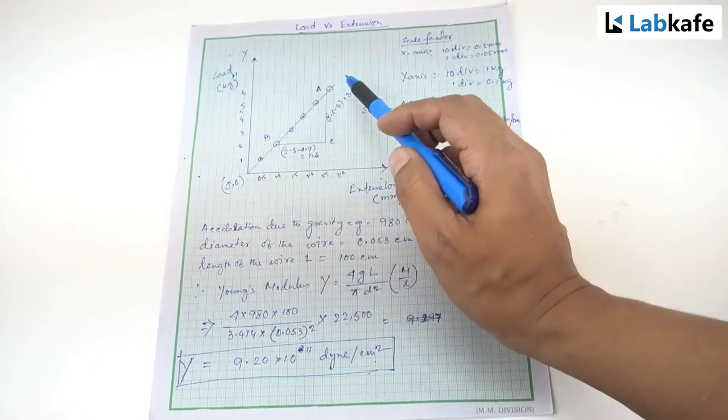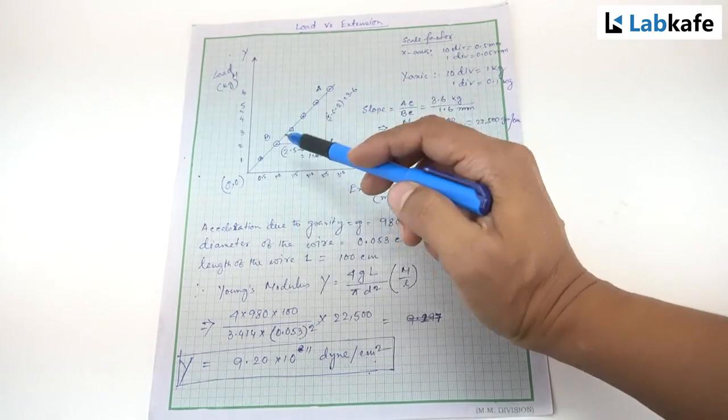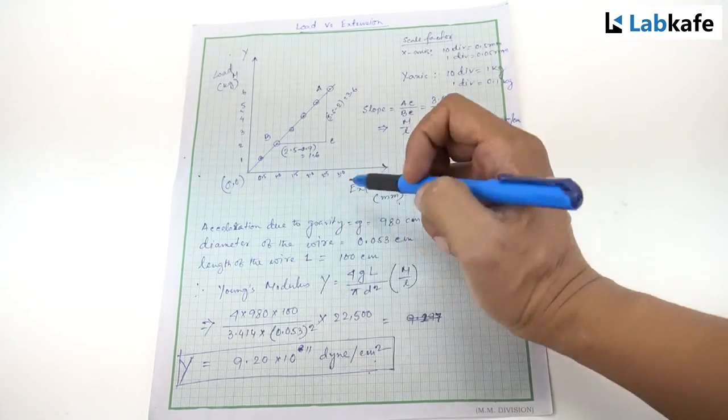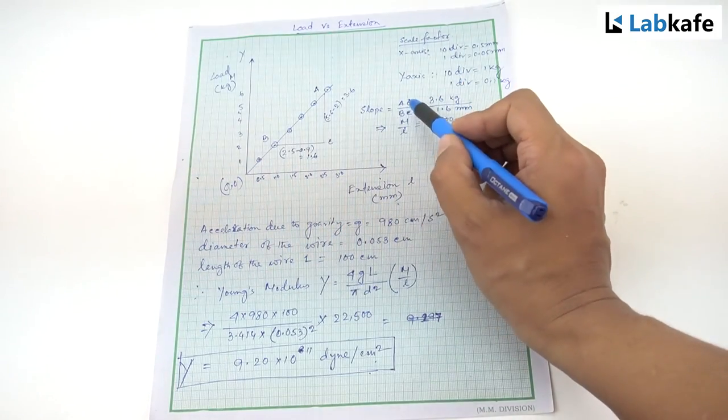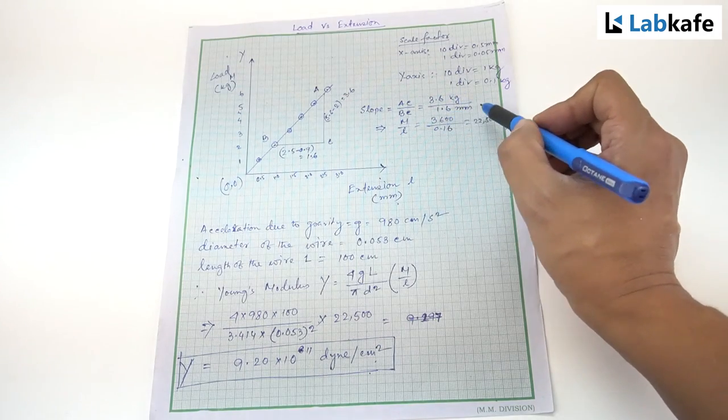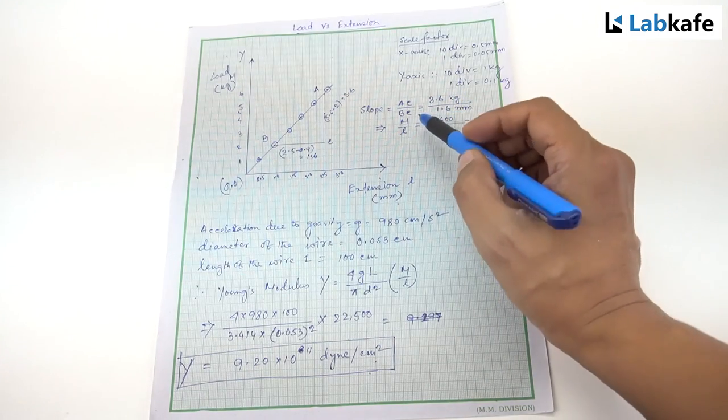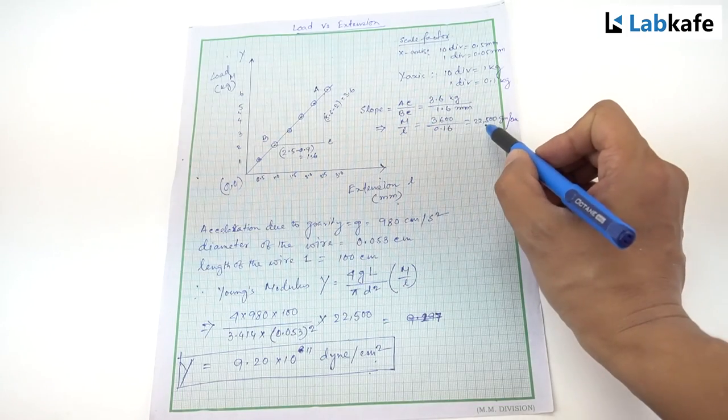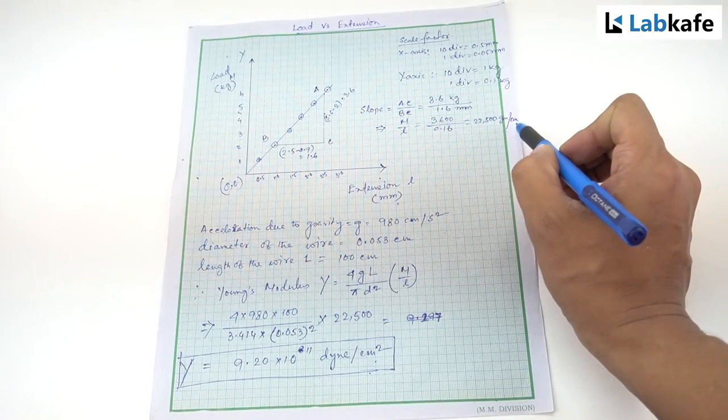The graph shows it's a straight line passing through the origin. This is the verification of Hooke's law. The slope of the graph AC by BC is 3.6 kg by 1.6 mm or M by l equals 22,500 grams per centimeter.